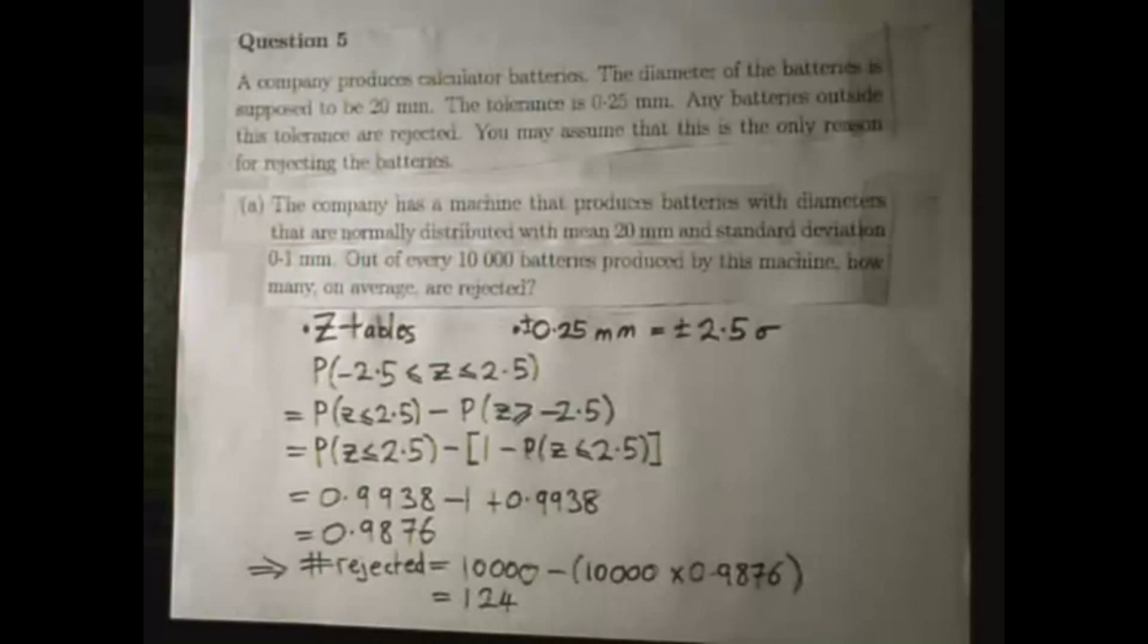To find the number that are rejected, I take 10,000 which is the total number produced and take away the number that are accepted. So it's 10,000 multiplied by 0.9876 and that gets me 124. That is how many batteries are rejected on average.